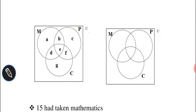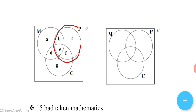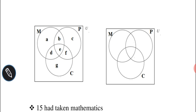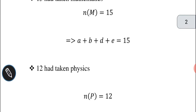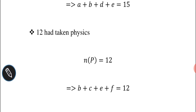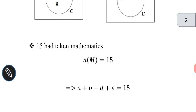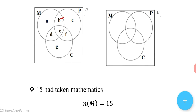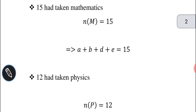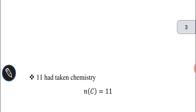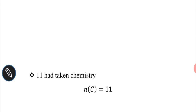In the physics circle, we have regions B, C, E, and F. So B + C + E + F = 12. And 11 had taken chemistry, so N(C) = 11.